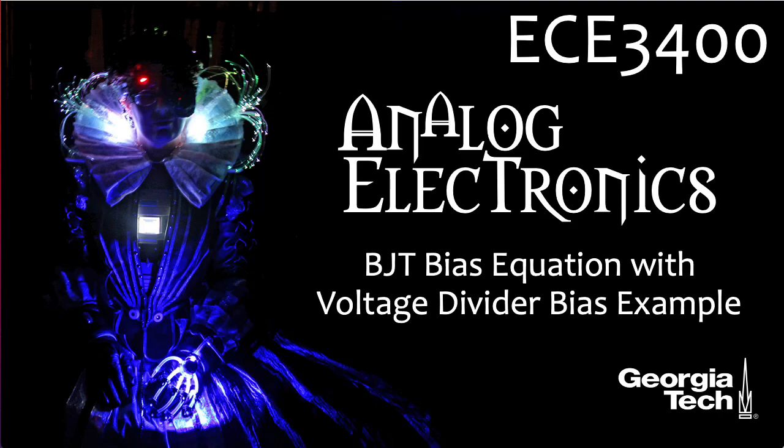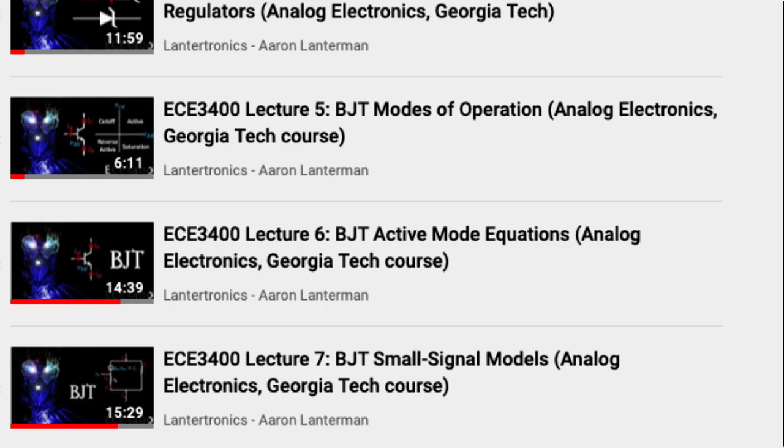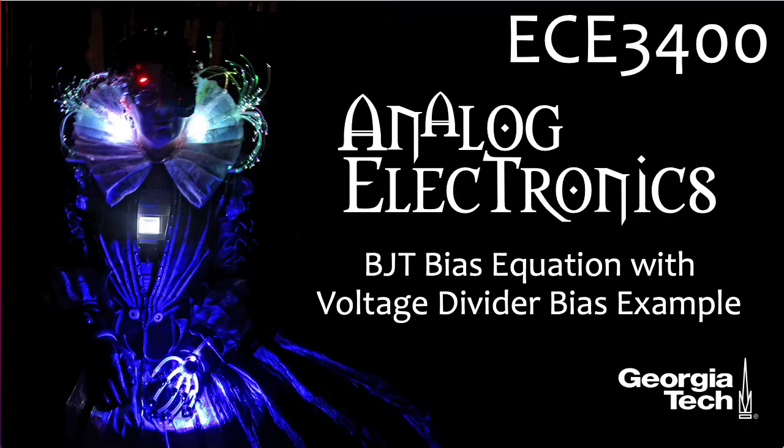Hi there. My name is Aaron Lanterman. I'm a professor of electrical and computer engineering at Georgia Tech, and in the last couple of lectures of EC3400 analog electronics, we've looked at small signal models for BJTs. Now, in order to create these small signal models, we need to compute these small signal parameters, and in order to do that, we need to know what the DC bias currents are.